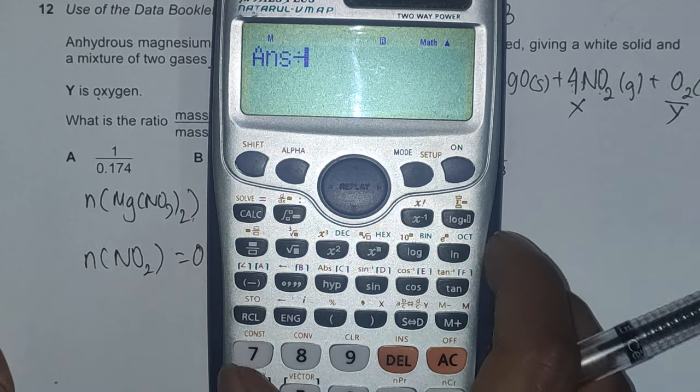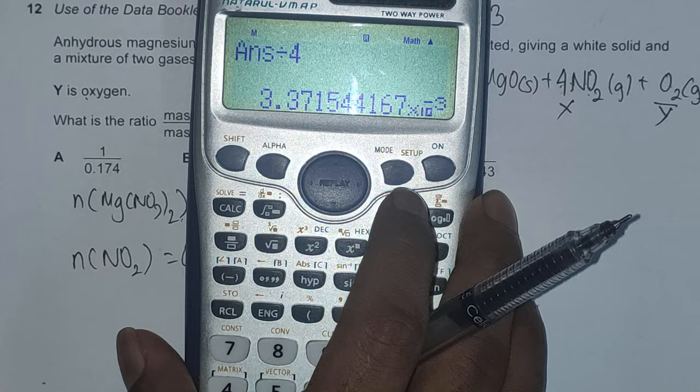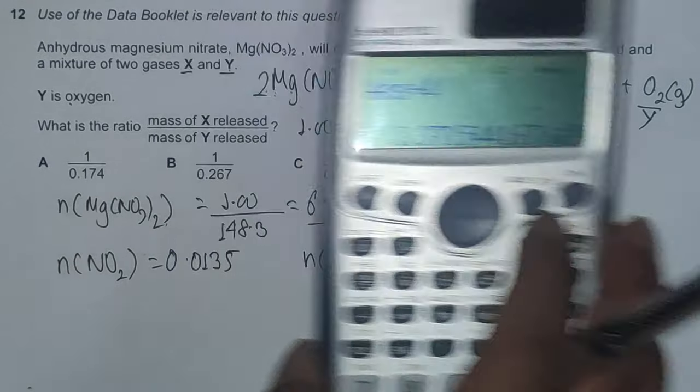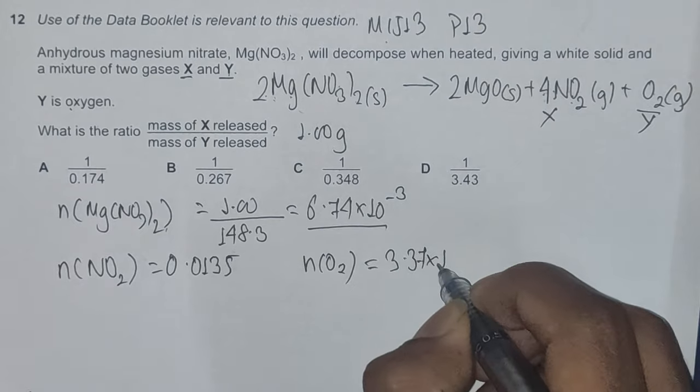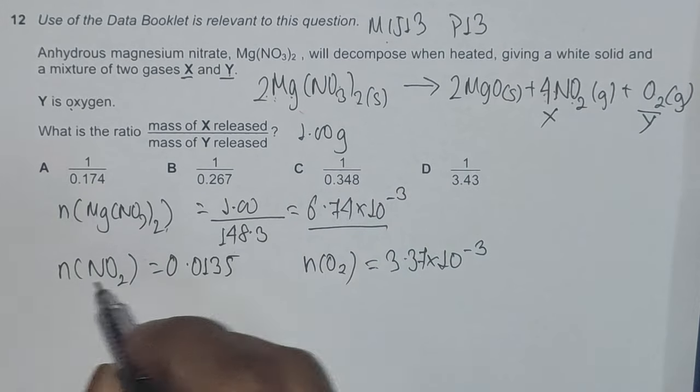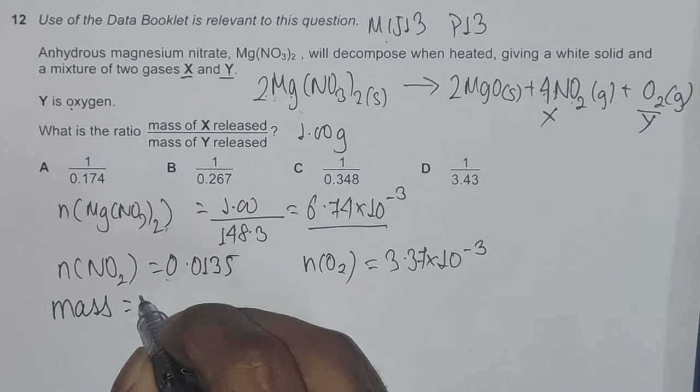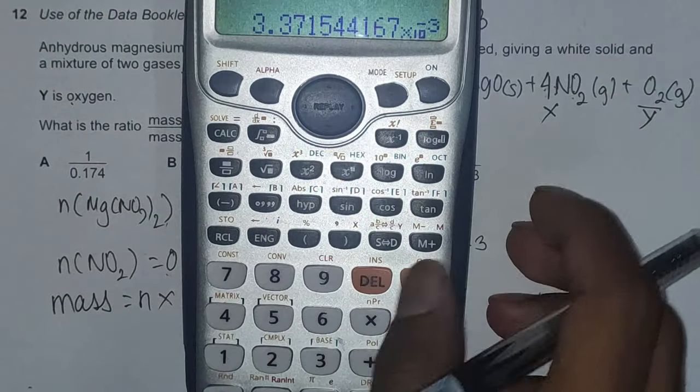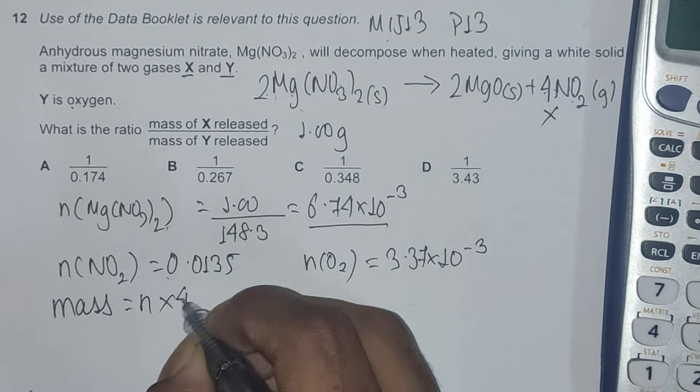which is 3.37 × 10^-3. Their mass, we have its mass as the mole multiplied by the MR value, which is 14 plus 32, this is 46, which is 0.0135 multiplied by 46 is 0.621.